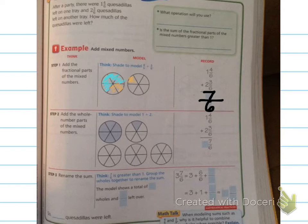Step two is to shade to model 1 plus 2, the whole numbers. So they already have one shaded in for me, so I'm going to shade in another. So that's two shaded in. So how many wholes do I have shaded in? I have 3 wholes shaded in.